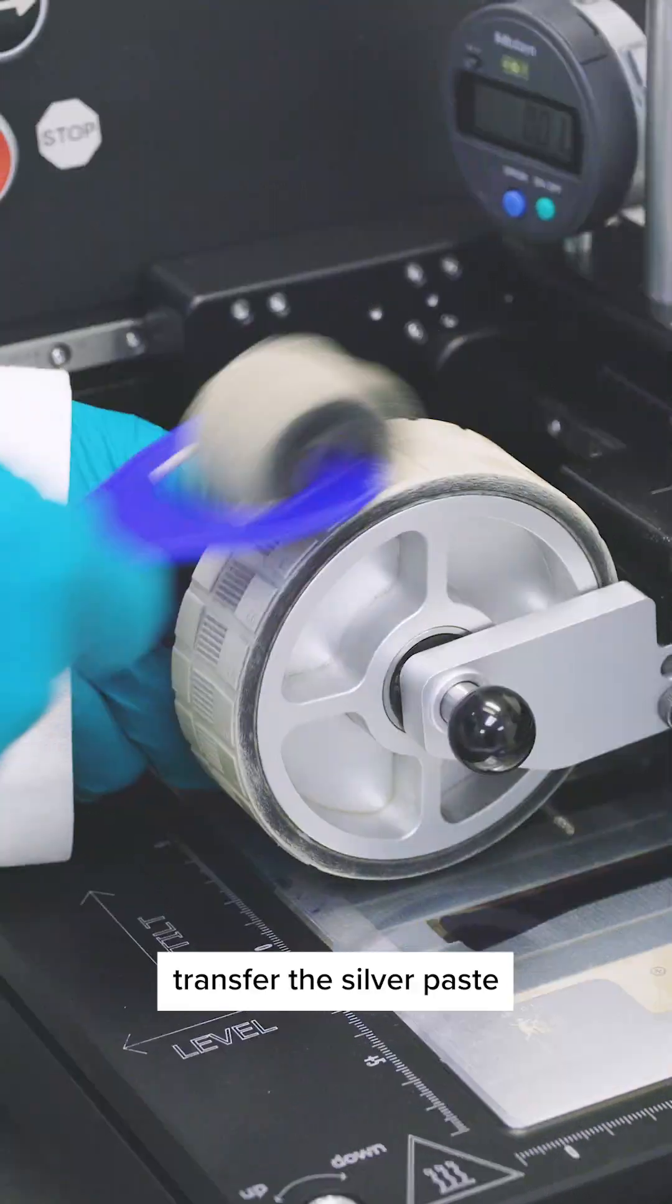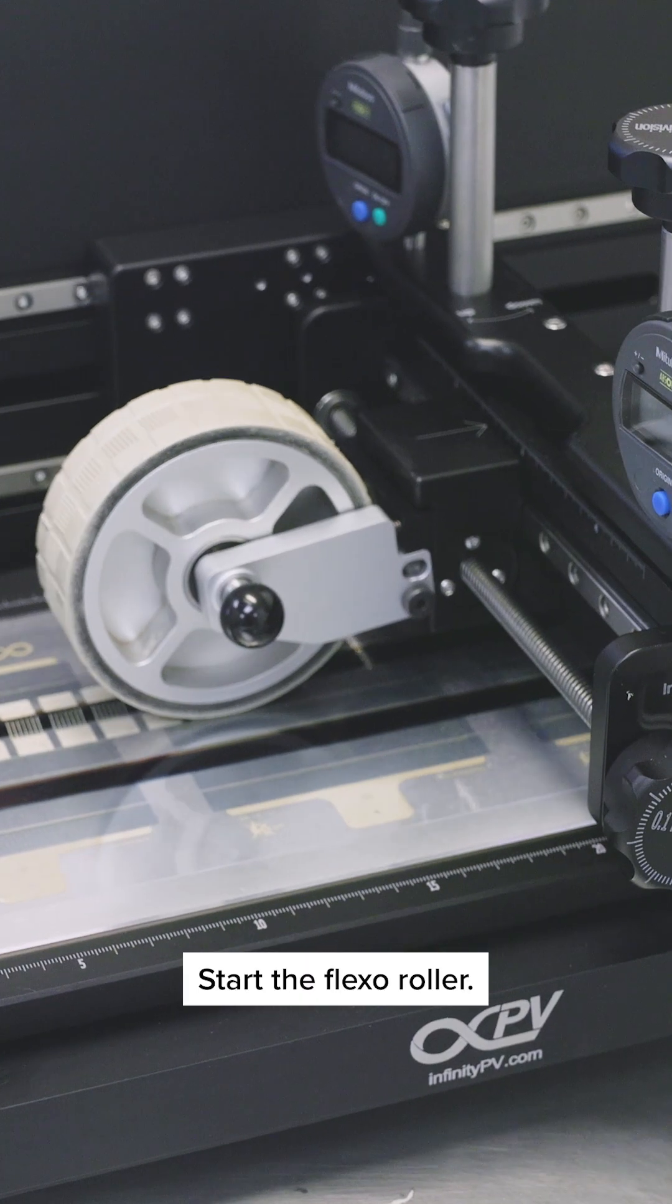Using a small paint roller, transfer the silver paste to the printing roller. Start the flexoroller.